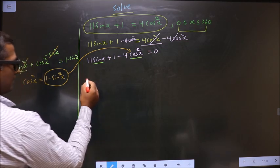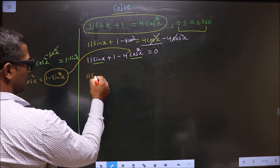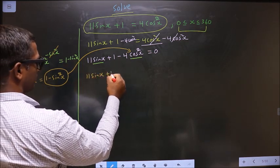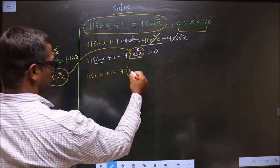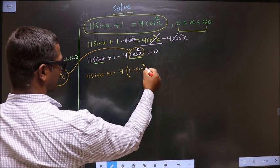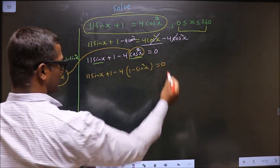This equation becomes 11 sin x plus 1 minus 4 times, in place of cos square x, 1 minus sin square x equal to 0.